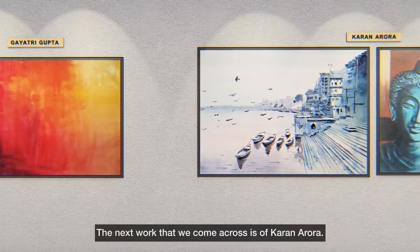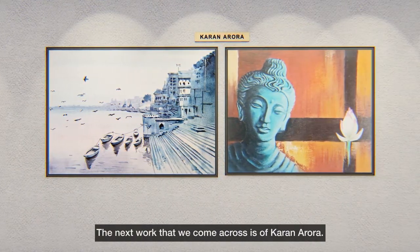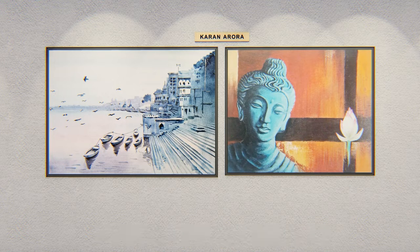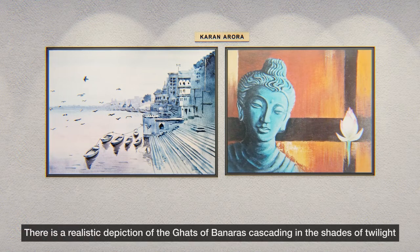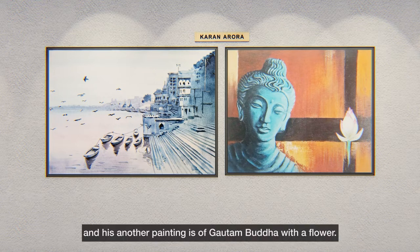The next work we come across is of Karan Aurora. There is a realistic depiction of the ghats of Banaras cascading in the shades of twilight, and his other painting is of Gautam Buddha with a flower.